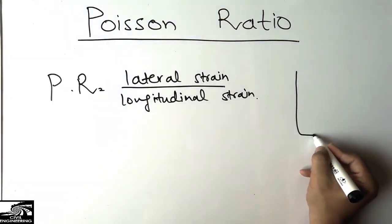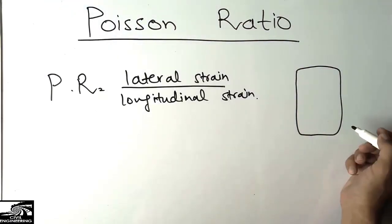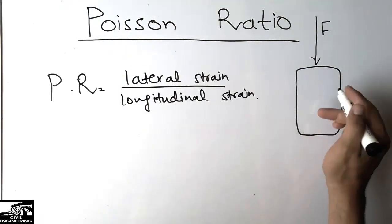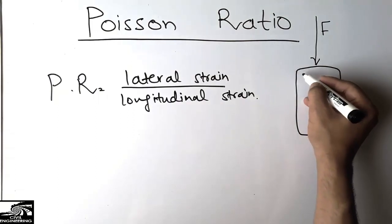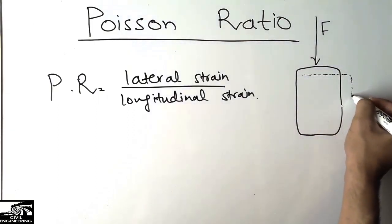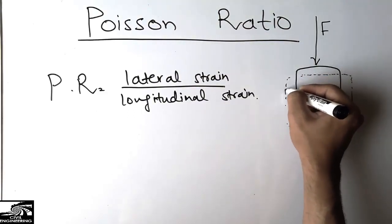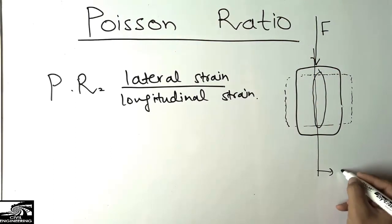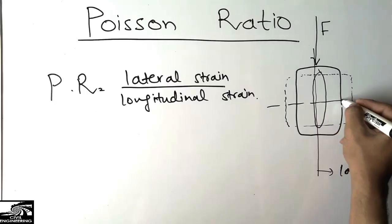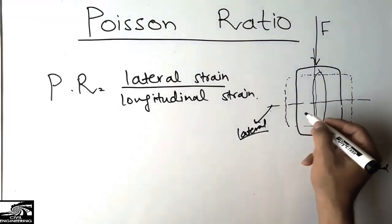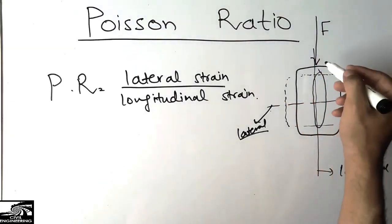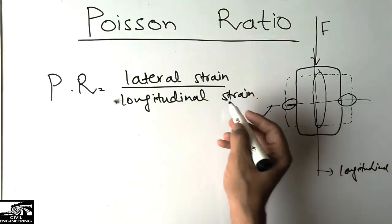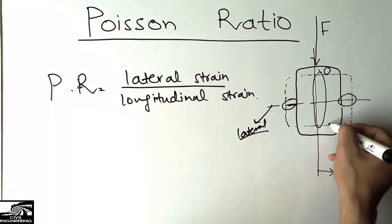I will explain it by taking an example of a cylinder — it may be of any material, it may be of concrete, clay, or aluminum. When we apply a compressive force on it, it will compress in the longitudinal direction and expand in the lateral direction. The longitudinal axis runs along the length of the cylinder, while the lateral axis is perpendicular to it. So it compresses longitudinally and expands laterally.